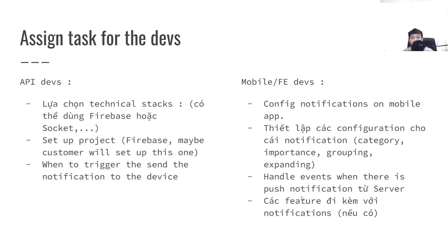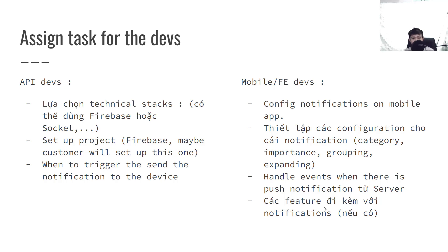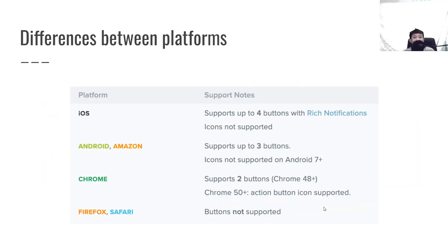Some extra features can go within the notification. For example, you can reply directly back to an email from the notification drawer — like the email example from the beginning. If you want that extra feature within the notification, it is possible but quite limited.